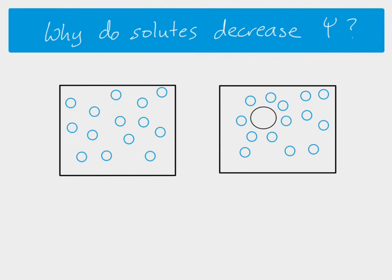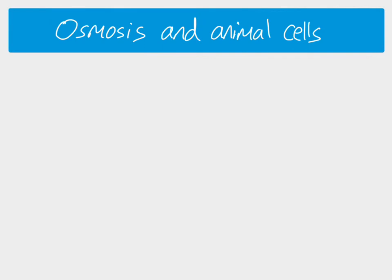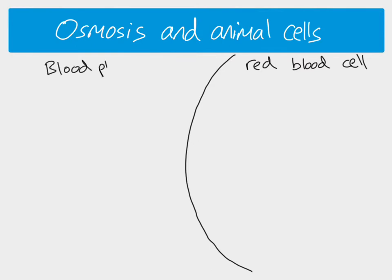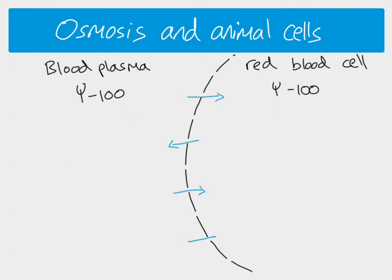Let's think about animal cells. Here is a red blood cell surrounded by blood plasma. Using illustrative numbers: if the blood plasma has a water potential of minus 100 and the red blood cell also has a water potential of minus 100, then with the cell surface membrane acting as a partially permeable membrane, there is no net movement of water — the same amount goes in as comes out. However, if the blood plasma has a higher water potential, say minus 20, compared to minus 100 inside the cell, then minus 20 is nearer to zero and therefore higher.